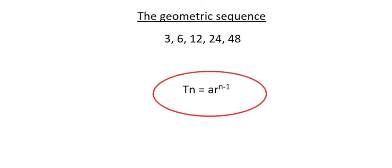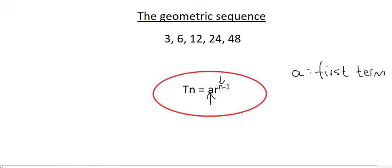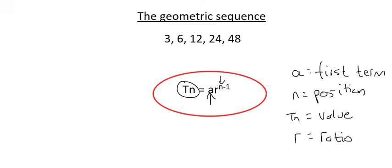So A that we see in the front, that's going to be the same as the arithmetic, so that's going to stand for the first term. N over here, that's just going to be the position again. TN is going to stand for the value. And then the new letter that we get in this formula is R, which stands for the ratio. In the arithmetic sequence, that letter was a D for difference. Now it's a ratio because we're multiplying by a particular ratio.